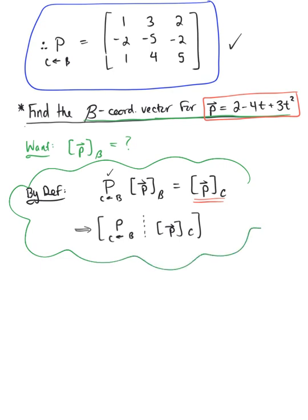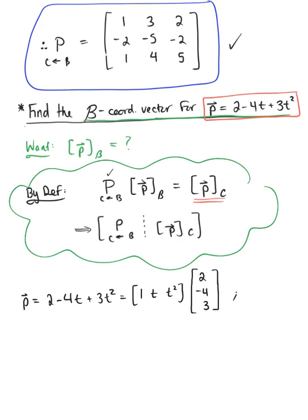The polynomial vector p, defined as 2 minus 4t plus 3t squared, converts to a matrix equation: the standard basis matrix {1, t, t squared} multiplied by the coefficient column vector [2, −4, 3]. So the coordinates of vector p relative to basis C are [2, −4, 3].